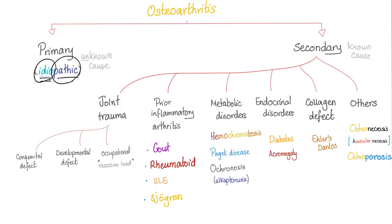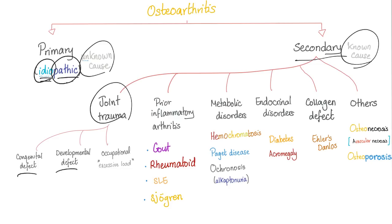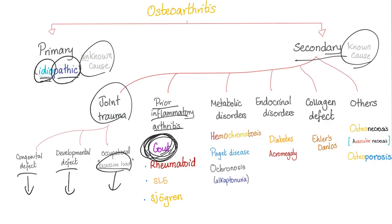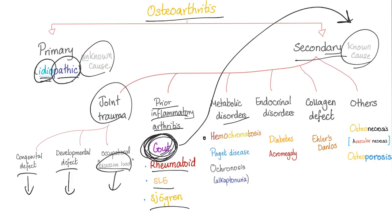Secondary osteoarthritis has a known cause — causes include joint trauma, congenital defect, developmental defect, and occupational excess load such as construction workers. Prior inflammatory arthritis — gout, rheumatoid arthritis, lupus — can also lead to secondary non-inflammatory osteoarthritis. Metabolic disorders such as hemochromatosis, Paget disease of bone, and ochronosis or alkaptonuria are also causes.